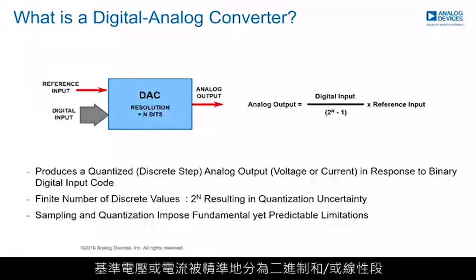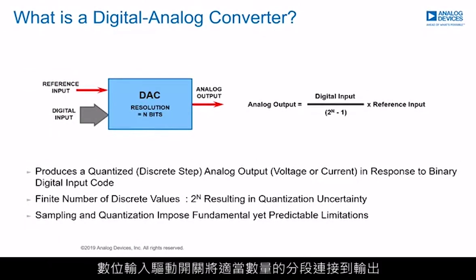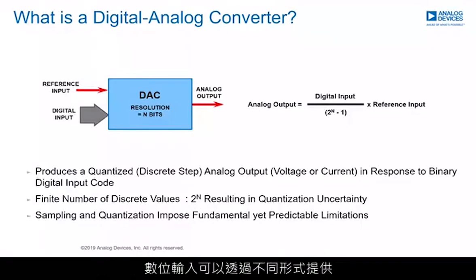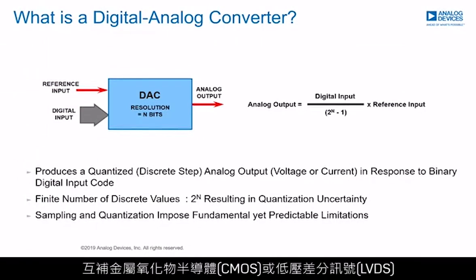A reference quantity — either voltage or current — is accurately divided into binary and/or linear segments, where the digital input drives switches that connect an appropriate number of segments to the output. The digital inputs may be supplied in different forms, such as transistor-transistor logic (TTL), complementary metal oxide semiconductor (CMOS), or low-voltage differential signaling (LVDS).